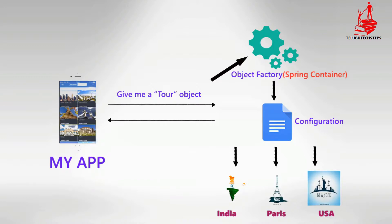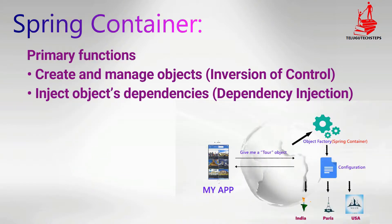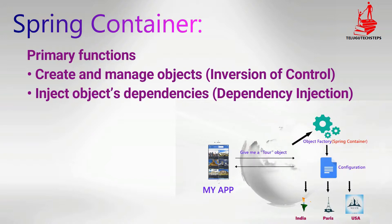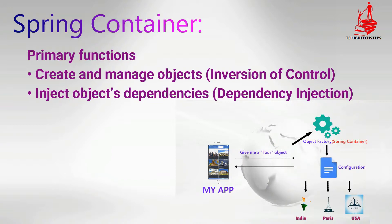I hope this diagram is clear. The next step is to see the purpose of Spring Container and its duties. Let's look at the Spring Container primary functions. First is to create and manage the object — that is Inversion of Control. Second is to inject object dependencies. This concept is called Dependency Injection, which we will cover in the upcoming classes.